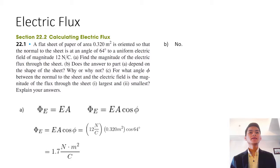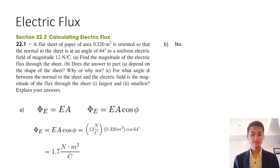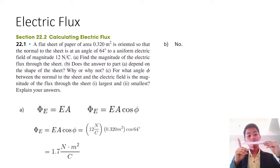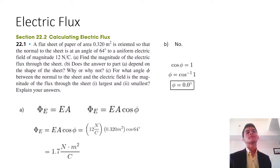The answer to part a does not depend on the shape of the sheet. We are given a flat sheet, which means the electric field is uniform and the angle between the normal and the electric field is constant all throughout the piece of paper. The electric field penetrates the plane at the same angle throughout, so the result is independent of the shape of the sheet.